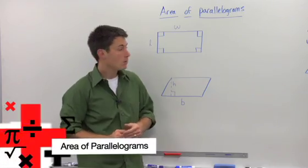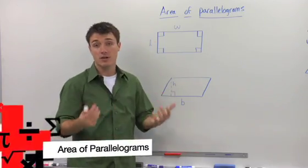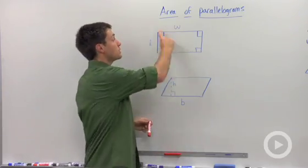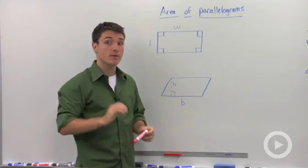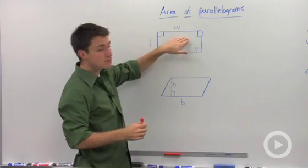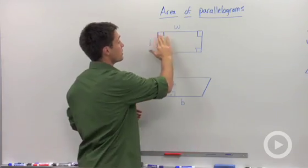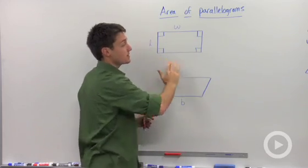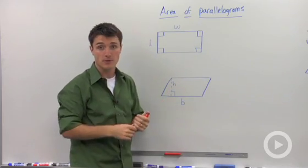When we talk about area, a rectangle doesn't really have an area. What we're talking about is the region bound by the rectangle. So this rectangle doesn't really have an area, but this region that is formed by the sides of the rectangle has an area.